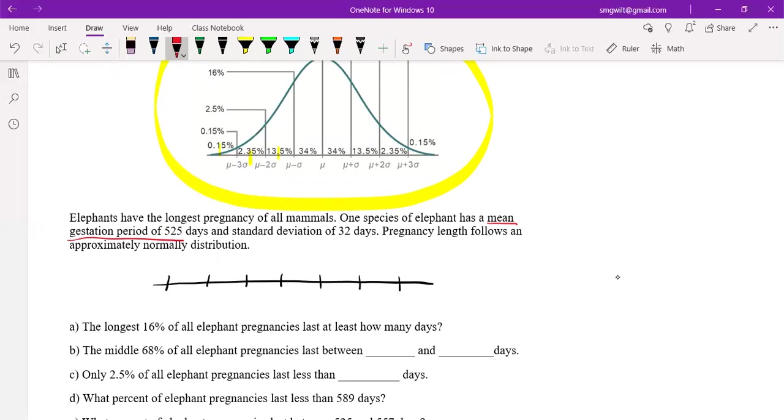So to create this curve, taking the mean which they tell me is 525, I've got elephants have the longest pregnancy of all mammals. One species has a mean gestation period of 525 days. Think about that, they're pregnant for almost two years there. And then a standard deviation of 32 days. Remember that to create this, I'm taking that 32 and I'm adding it to get the next value. If I'm going backwards, I'm subtracting that 32.